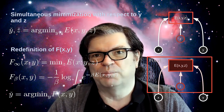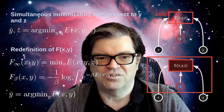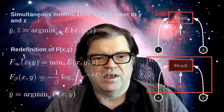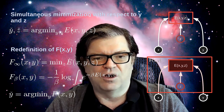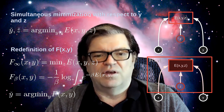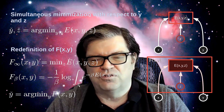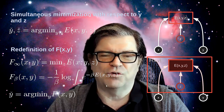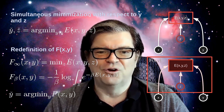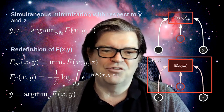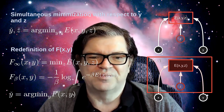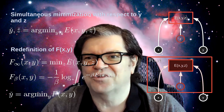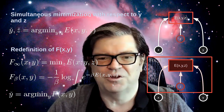One way to do this, derived from probabilistic models, is marginalization. You compute F-beta of X, Y as minus one over beta times the log of the integral over Z of e to the minus beta E of X, Y, Z. Physicists call this a free energy or the log partition function. The formula F-infinity is the limit when beta goes to infinity of F-beta, because as beta grows large, the only term that counts in the integral is the one with the smallest energy — all others are exponentially suppressed.